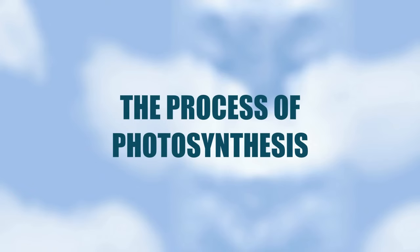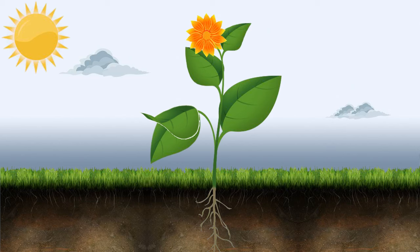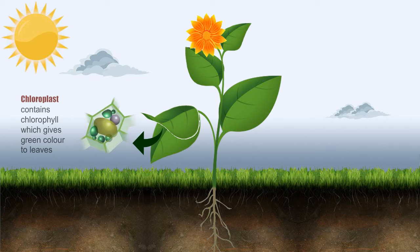Photosynthesis takes place in the leaves of plants. The leaves are made up of very small cells. Inside these cells are tiny structures called chloroplasts. Each chloroplast contains a green chemical called chlorophyll, which gives leaves their green colour.